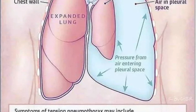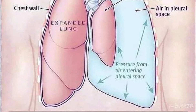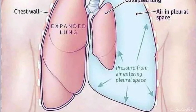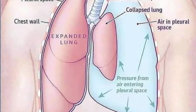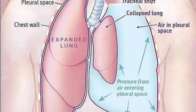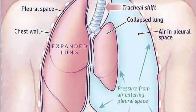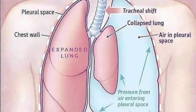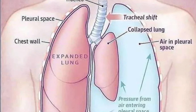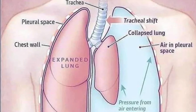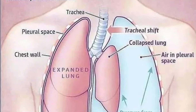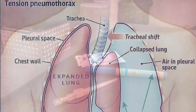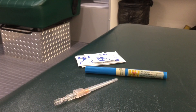Signs and symptoms include chest pain, difficulty breathing, unequal chest rise and fall, absent or decreased breath sounds on the affected side, JVD, and tracheal deviation to the side of the affected collapsed lung. We will also see signs of poor perfusion like clammy, pale, diaphoretic, or cyanotic skin, low blood pressure, and altered mental status.